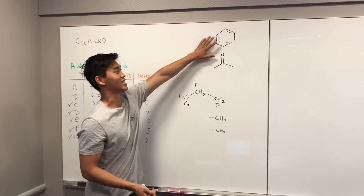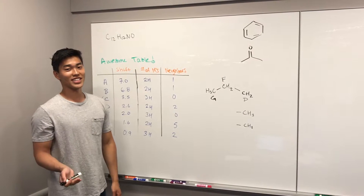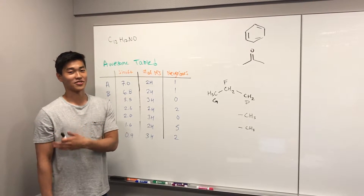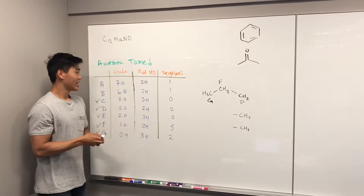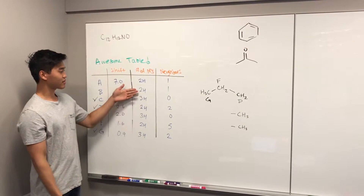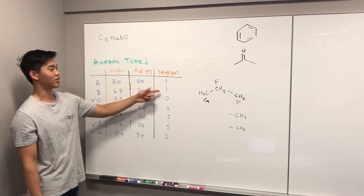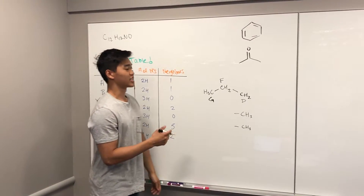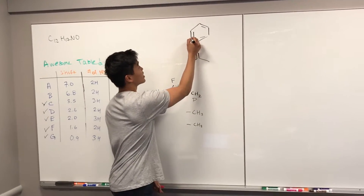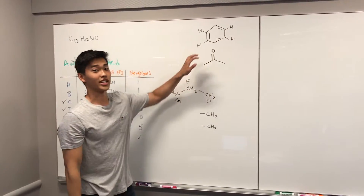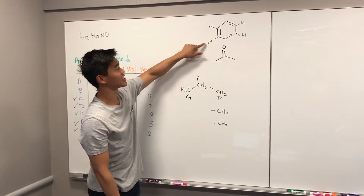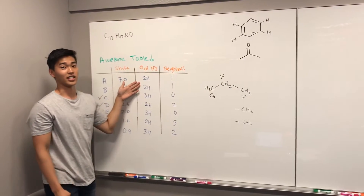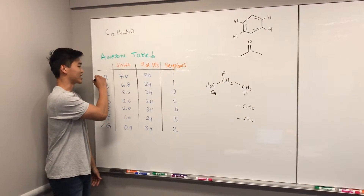Based on the DOUs we know there's a benzene, and benzene has three different configurations if it has four hydrogens. From our awesome table, two hydrogens have one neighbor, and there's a second set of two hydrogens that also have one neighbor. That leads us to the para configuration, where each hydrogen has one neighbor on the ring, and that corresponds to what we see in the awesome table. We can check these off as well.